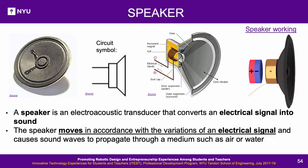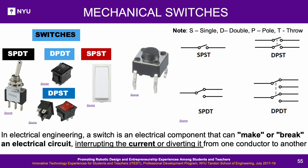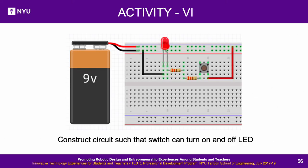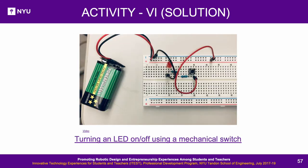A speaker is an electro-acoustic transducer that converts electrical input into sound. The cone moves in accordance with variations of an electrical signal and causes sound waves to propagate through a medium such as air or water. A mechanical switch is a component whose terminals get connected when the rocker is moved, used in electrical circuits to interrupt current or divert it from one conductor to another. Types include SPST (single pole single throw), DPST (double pole single throw), etc. Activity 6: Construct a circuit such that a switch can turn an LED on and off.